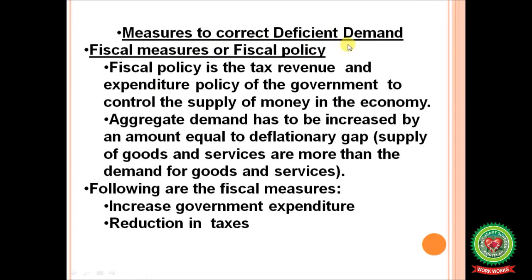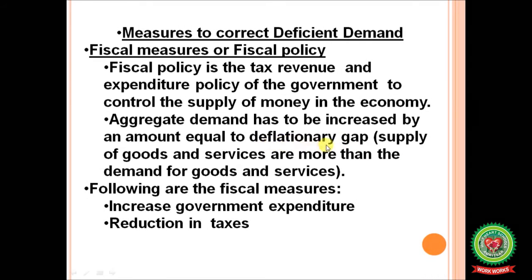Measures to correct deficient demand — Fiscal Policy: fiscal measures mean the government's tax policy (direct taxes on income and wealth, and indirect taxes like GST, excise duty, custom tax, entertainment tax, service tax) and expenditure policy to control the money supply. Expenditure policy includes building roads, dams, flyovers, and providing subsidies. Aggregate demand has to be increased by an amount equal to the deflationary gap — which is when the supply of goods and services exceeds the demand.